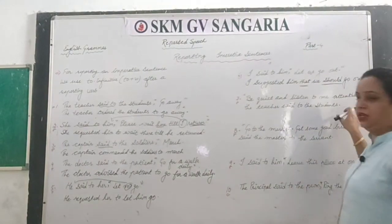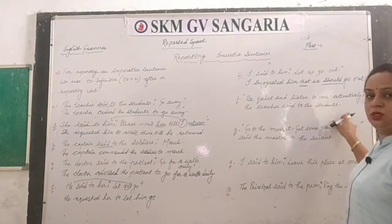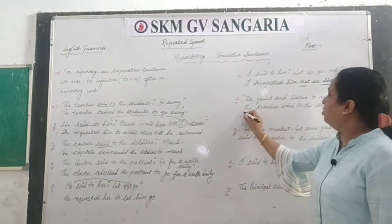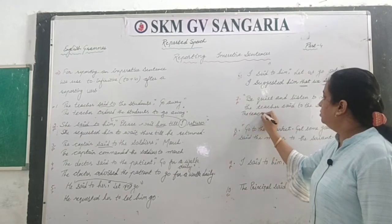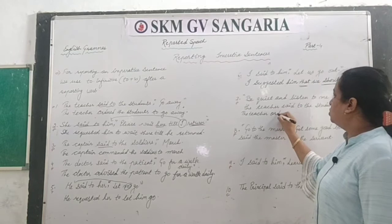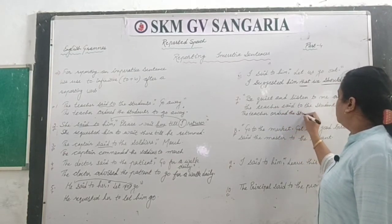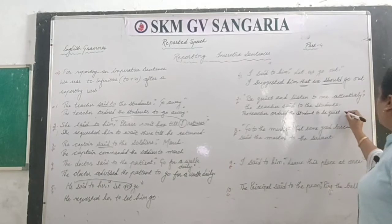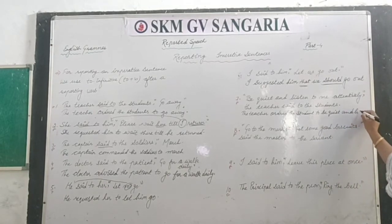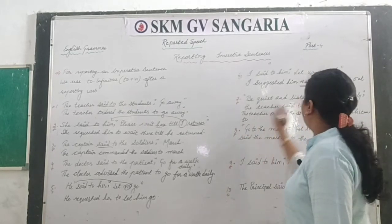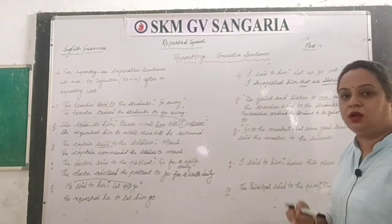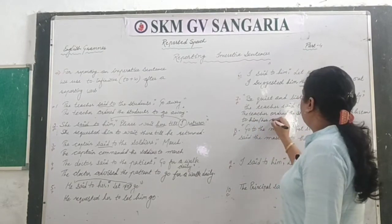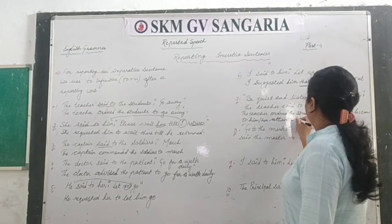The teacher said to the students, 'be quiet and listen to me attentively.' The teacher is giving an order, so: the teacher ordered the students to be quiet and listen to him or her attentively. The pronoun 'me' changes to 'him' or 'her' depending on context.